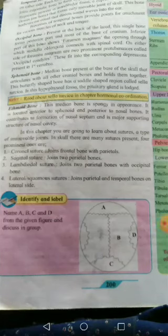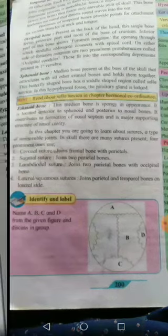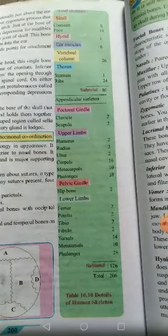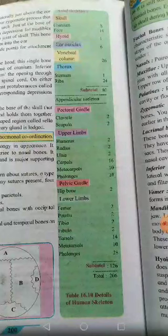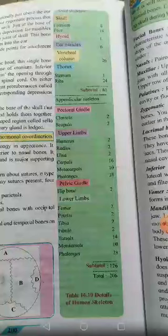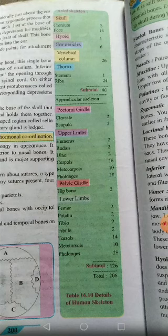Good morning everyone. Today we will discuss a table that shows the axial skeleton with details of the human skeleton. In the axial skeleton there is a skull: the cranium has 8 bones, and the face has 14 bones. Next, the hyoid bone, and in the ear ossicles there are 6 bones.